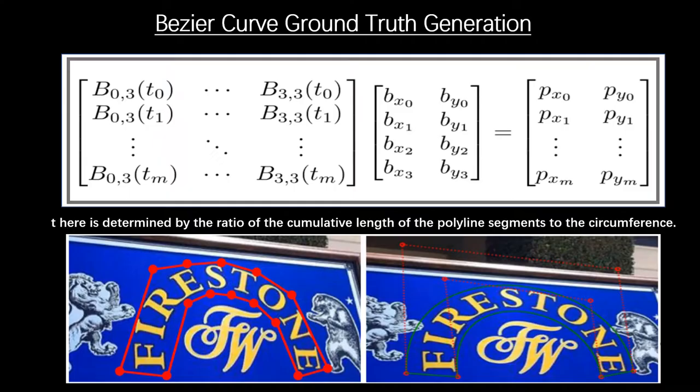However, since the existing data is based on polygons, we must generate the control points of the Bezier curve. According to the previous Bezier formula, we can inversely solve the coordinate values of the four control points through the least-square solution, as shown in the figure on the lower right.